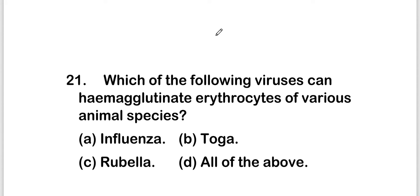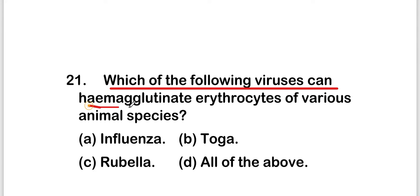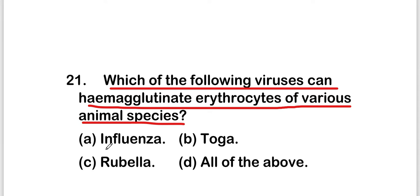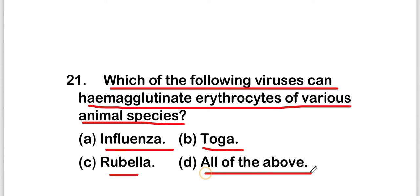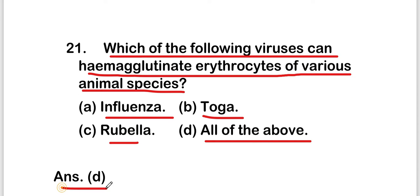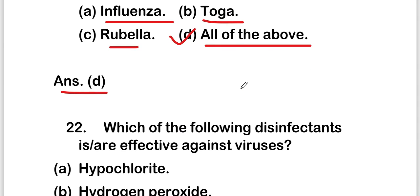Welcome to our new video on MCQs on virology or viruses, Part 2 of this series. The first question is: which of the following viruses can hemagglutinate erythrocytes of various animal species? The options are influenza virus, toga virus, rubella virus, or all of the above. The right answer is option D, all of the above.